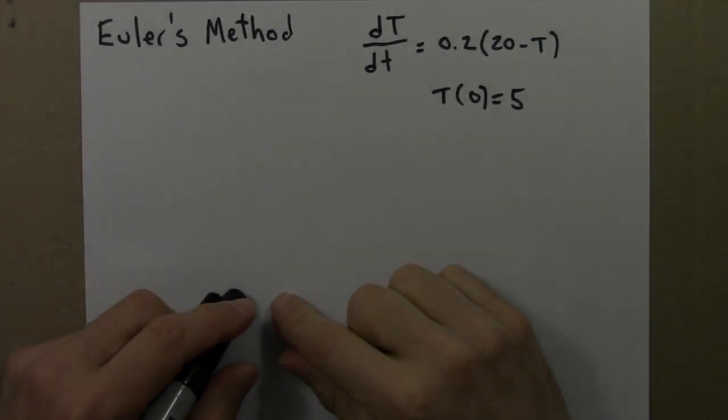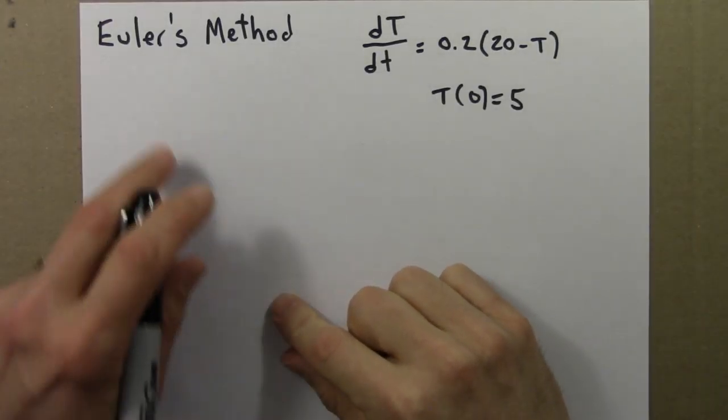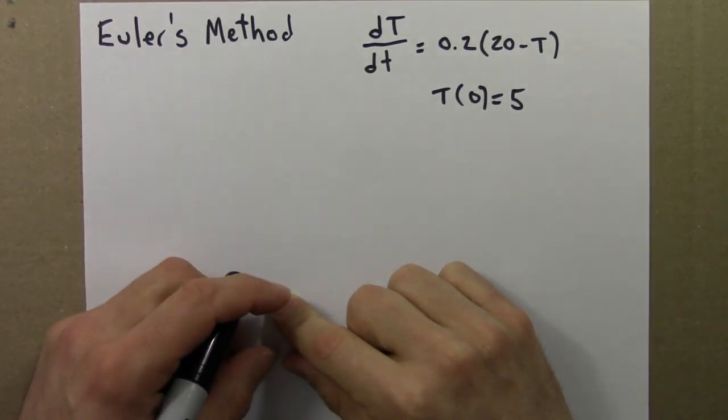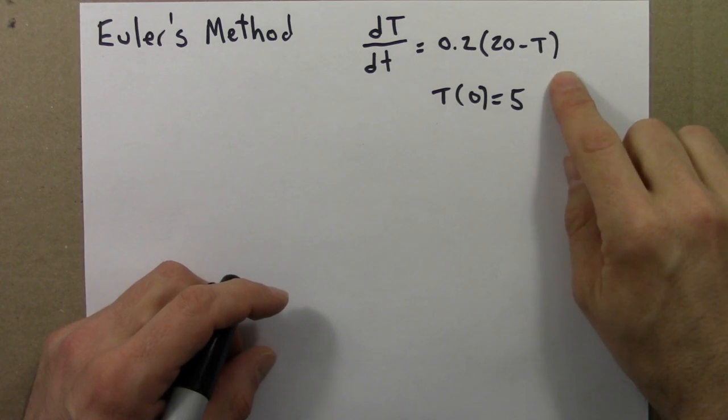Let's get started. The computational method that I'd like to present is known as Euler's method. Let's return to the example that we started with: Newton's law of cooling.